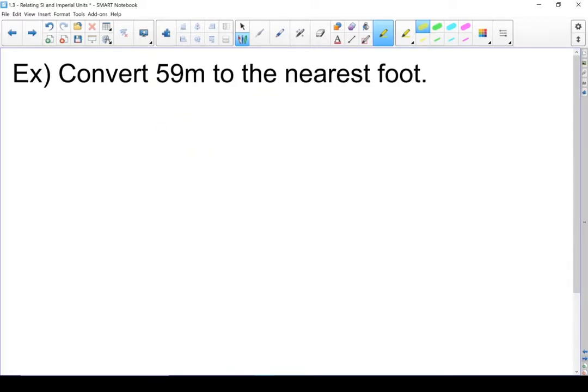Let's get to doing a conversion. Convert 59 meters to the nearest foot. Now some people can look at the conversions and they know right away whether to multiply or divide. But trusting that method leads to people making more mistakes. The way I prefer to solve these is using cross multiplication.